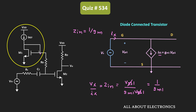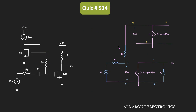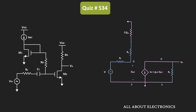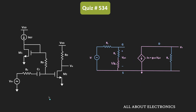The input impedance seen through resistor Rb is 1/gm1. In the simplified small-signal equivalent circuit, resistor Rb and the impedance 1/gm1 are connected in series between the gate and source terminals of MOSFET M2. This simplified circuit makes it straightforward to find the voltage gain.